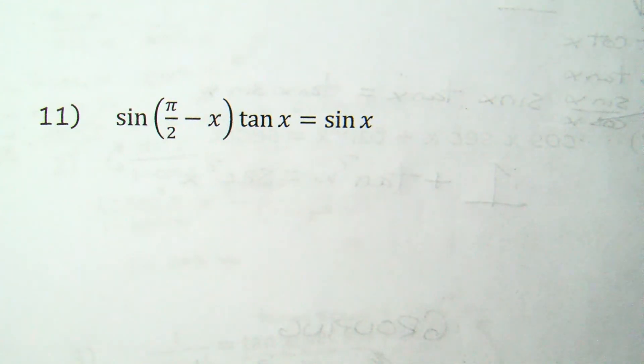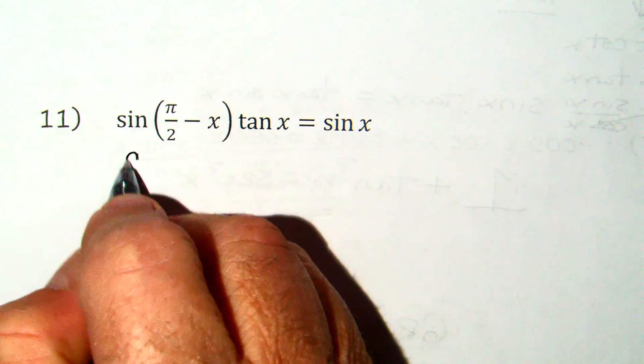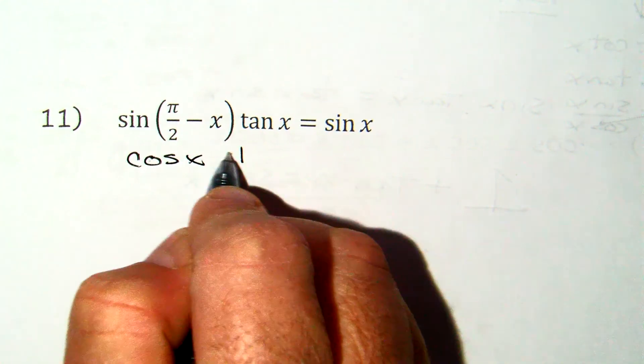sin(π/2 - x) times tan x. As soon as you see π/2 - x, you know it's a cofunction. Sine does not have a 'co,' so I add it. So this becomes cos x tan x.